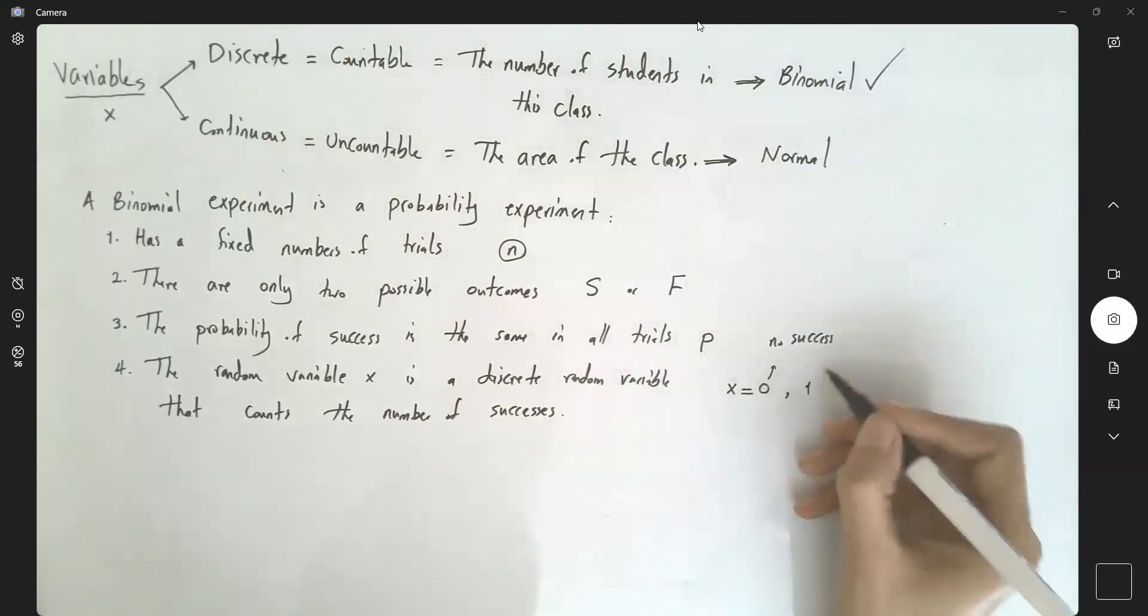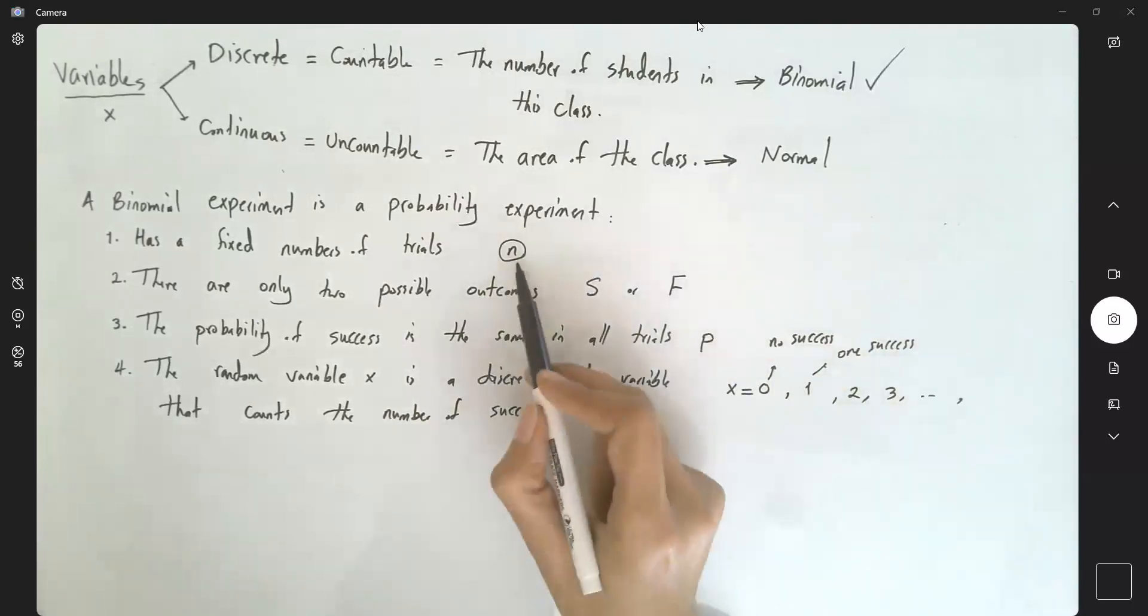x can be 1, one success. x can be 2, it can be 3, 4, 5, and it can take at most n successes.